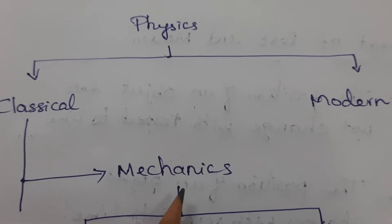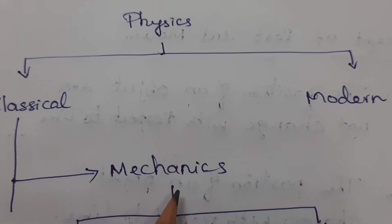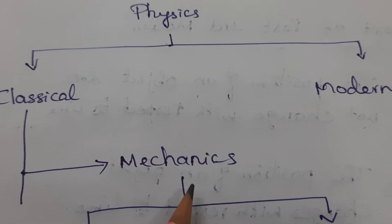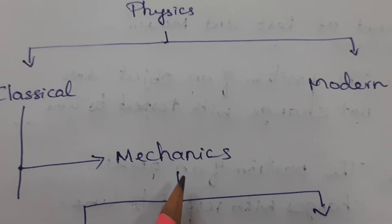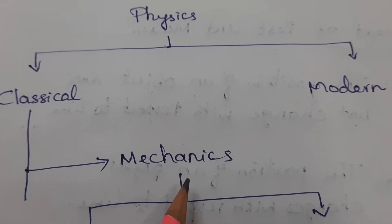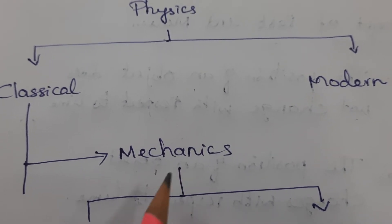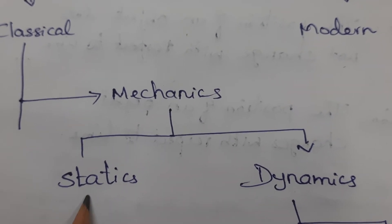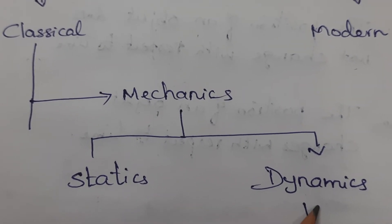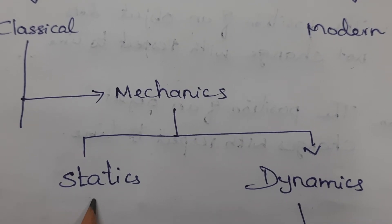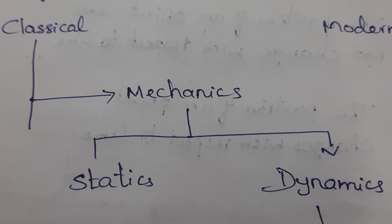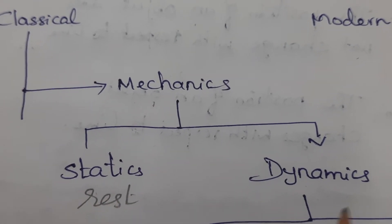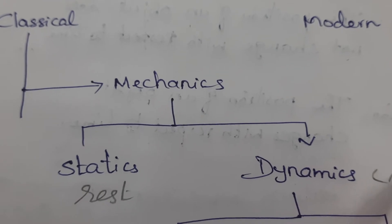What is meant by mechanics? Mechanics is the study of forces acting on the object, whether it is at rest or in motion. Mechanics is again classified into two: statics and dynamics. Statics deals with the object at rest, and dynamics deals with the object in motion.